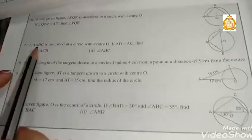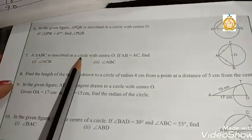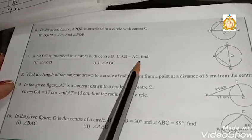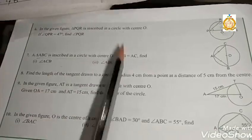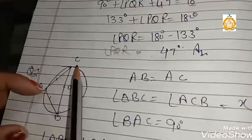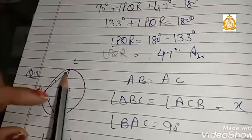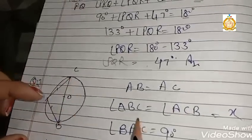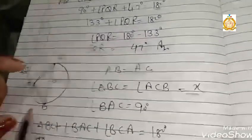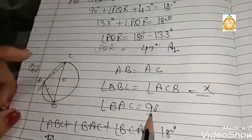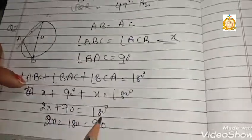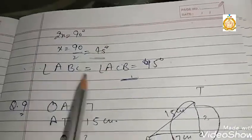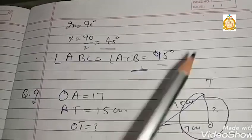Question number seven: Triangle ABC is inscribed in a circle with center O. If AB equals AC, find angle ACB. Since AB equals AC, the opposite angles are equal, so angle ABC equals angle ACB — both equal x. The angle in a semicircle is 90 degrees, so x plus 90 plus x equals 180 degrees. Therefore 2x equals 90, giving x equals 45 degrees. Both angles are 45 degrees.